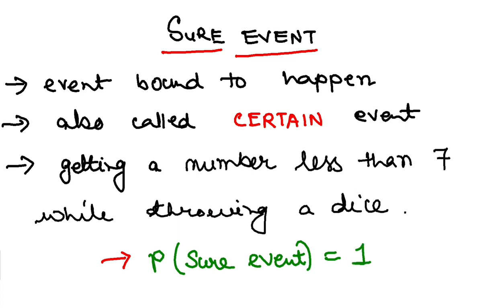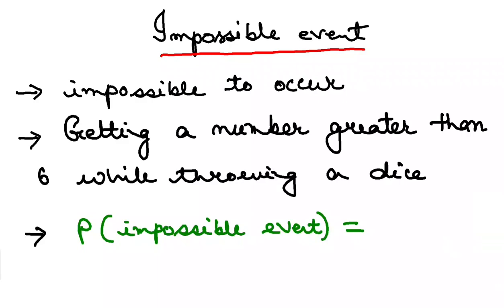The next type of event that you need to understand or have concept about is the impossible event. What is an impossible event? Again, as the name suggests, this is something which is impossible to occur.